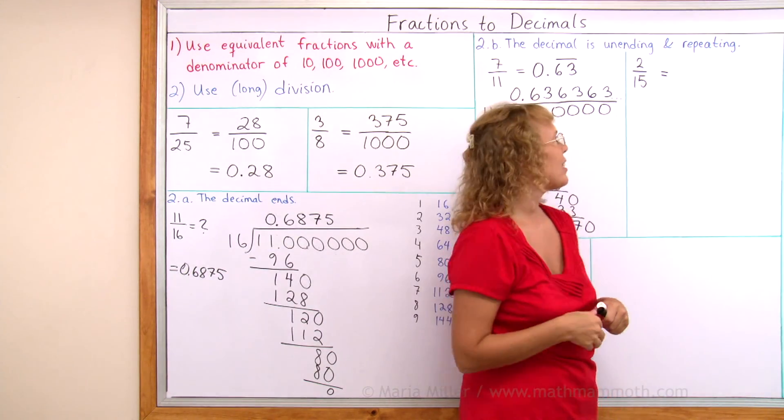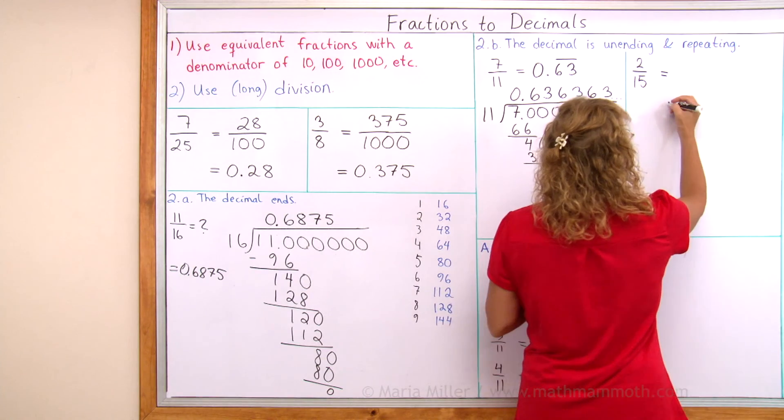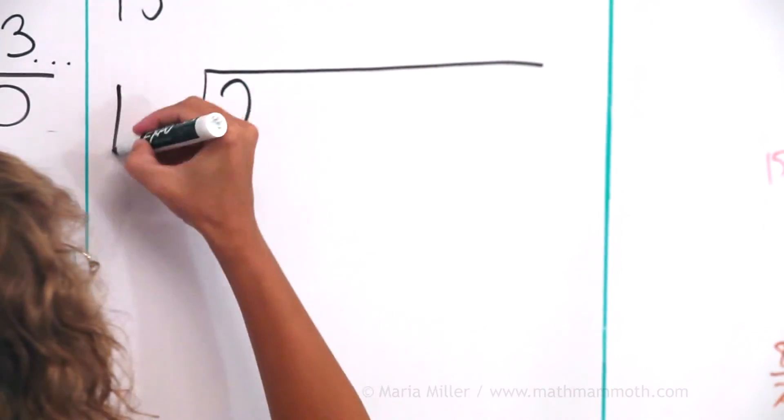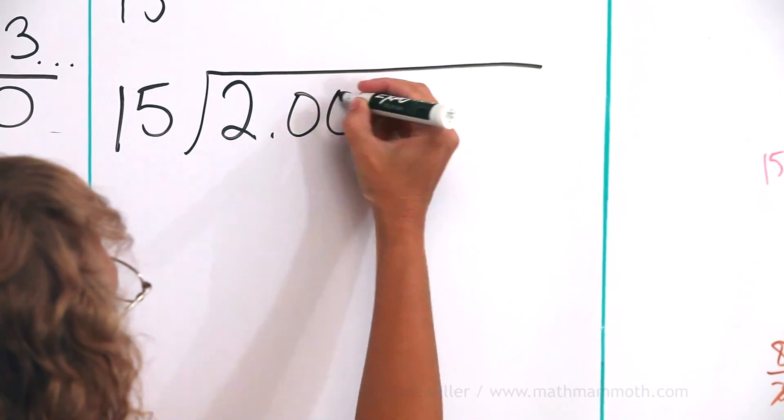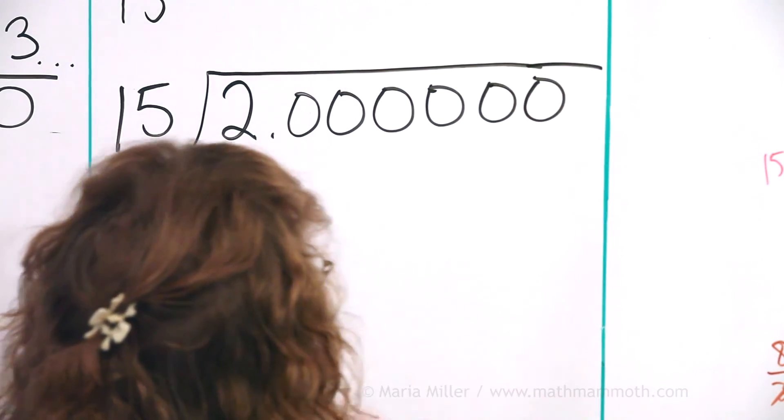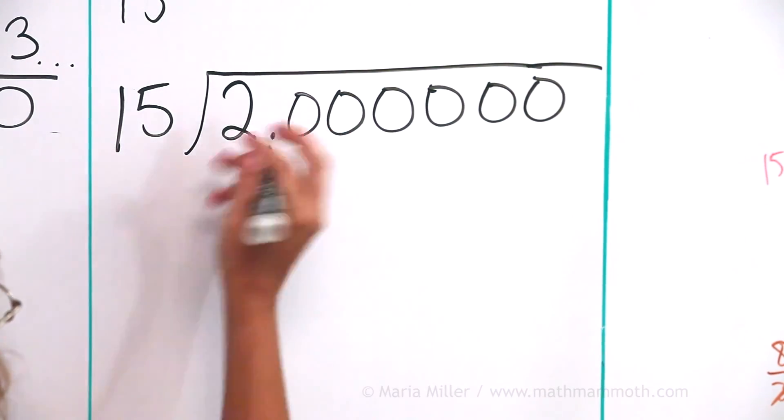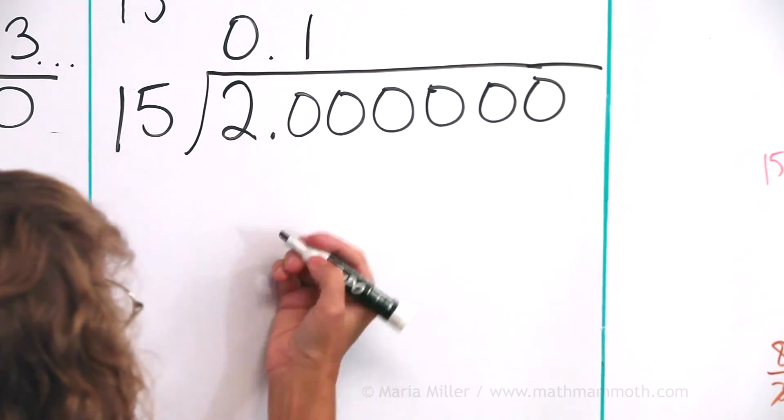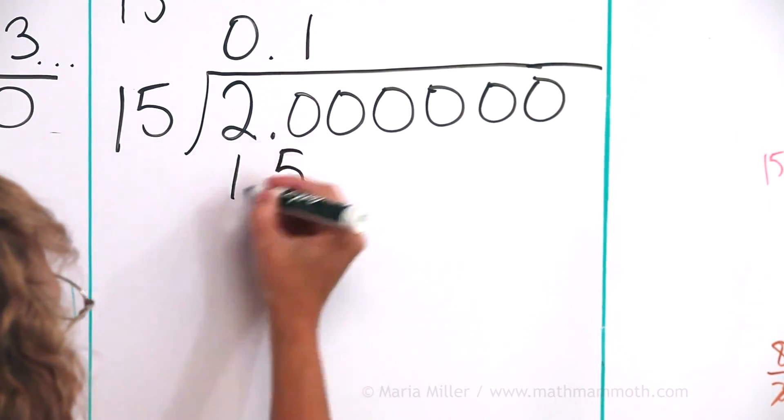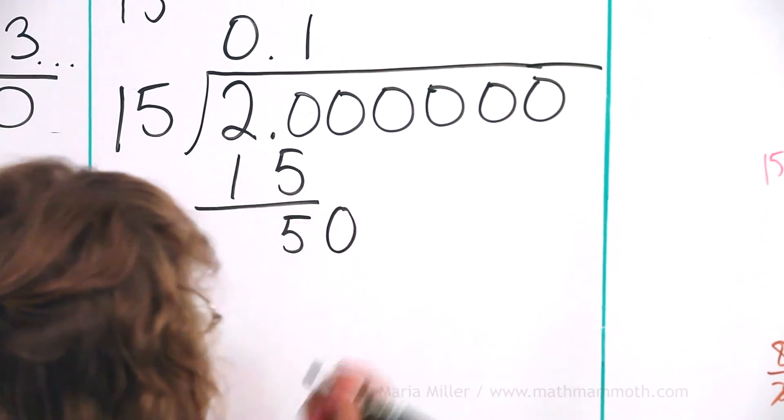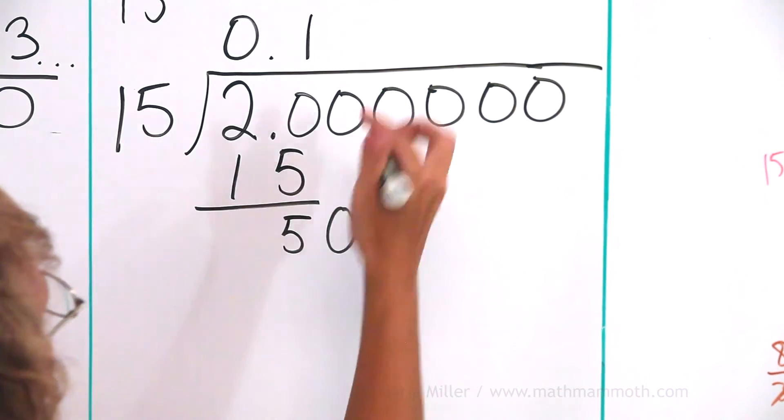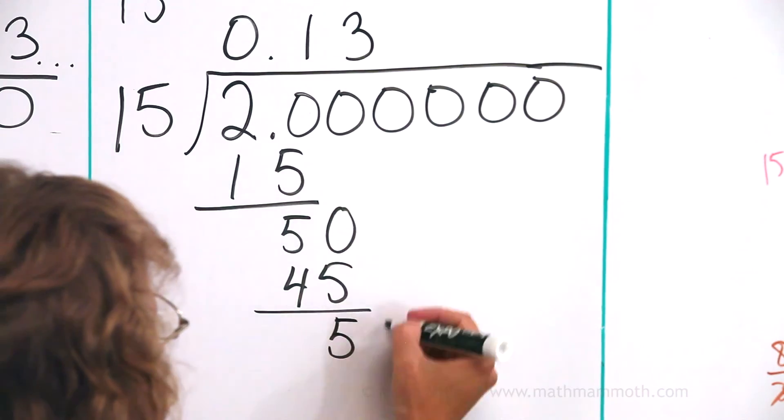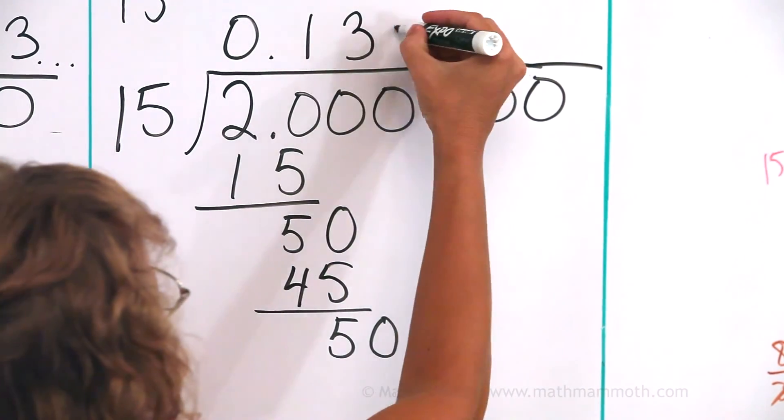Let's try another one. 2 divided by 15, 2 fifteenths. Notice that 2, the smaller number goes here, and 15 outside. 15 goes into 2 zero times as expected. 15 goes into 20 one time. One time 15. Subtract, we get 5 and then 50.